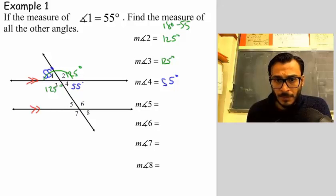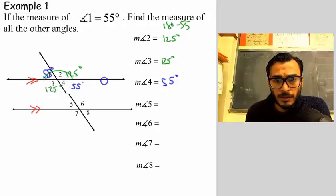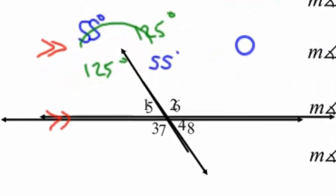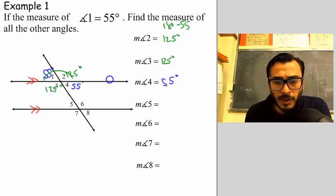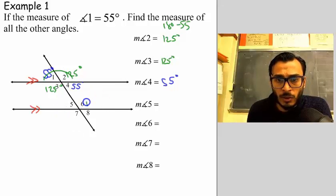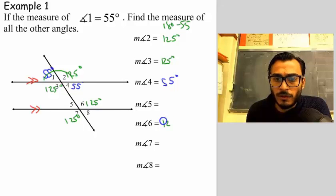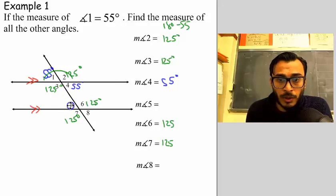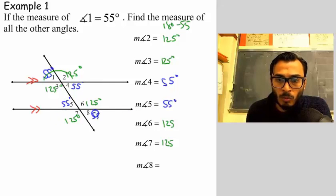We can also look at this another way. If I were to just cut this thing off, split it right here through the middle, and place it right on top of the other piece that's left, you can see that angle two corresponds to angle six — they're exactly the same. That's how we get corresponding angles. So angle six is also 125 degrees, and angle seven is also 125 because these are vertical to each other. And angle one corresponds to angle five, so angle five is also 55 degrees, and angle eight will also be 55 degrees.